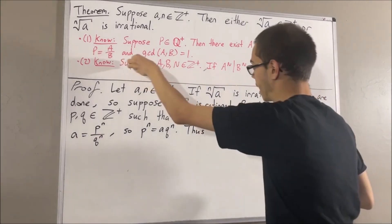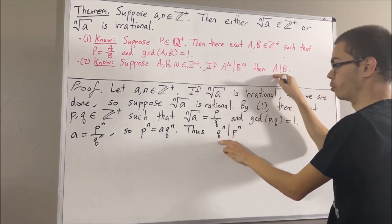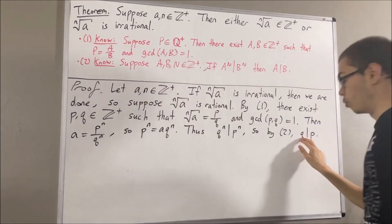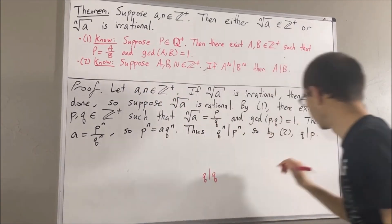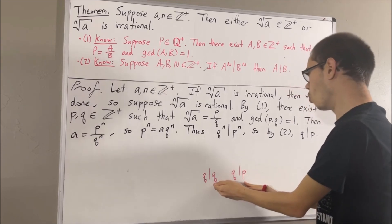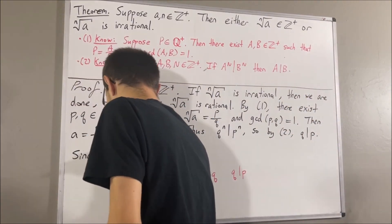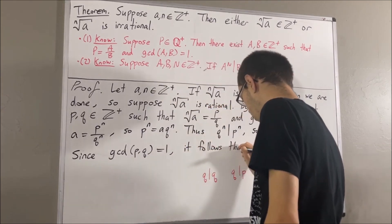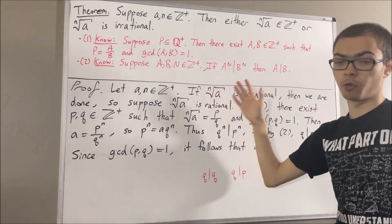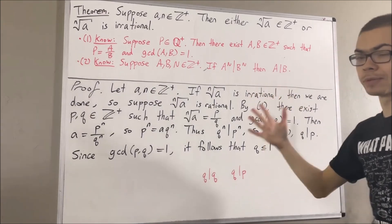And now that we know that this is true, we can apply fact number two. Since Q to the power of n is a divisor of P to the n, we can conclude that Q is a divisor of P. Now, at this point, we know that Q is a divisor of itself, and we know that Q is a divisor of P. So Q is a common divisor of P and Q. But since 1 is the greatest common divisor of P and Q, 1 must be greater than or equal to Q. In fact, since Q is a positive integer, we also know that Q is greater than or equal to 1. So, because Q is greater than or equal to 1 and less than or equal to 1, those two inequalities imply that Q must be equal to 1.